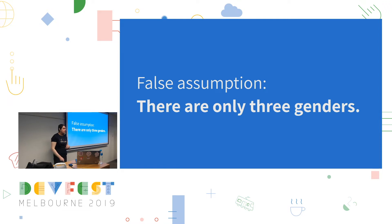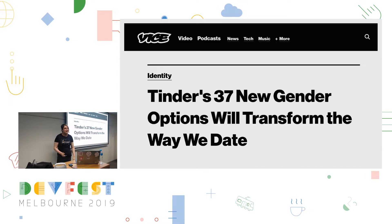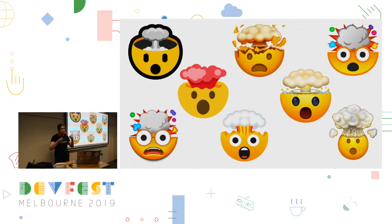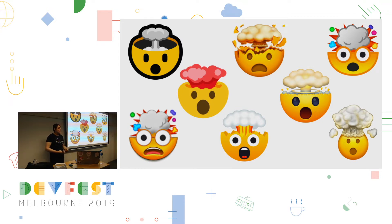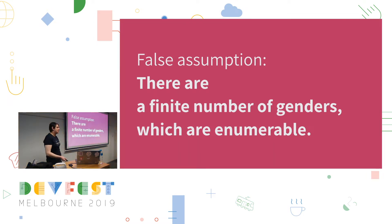So if there's not two, and there's not three, how many are there? Well, genderologists of leading dating app Tinder have discovered as many as 37 whole genders. I mean, it's still wrong, but it's good. What Tinder has done is going to allow a lot more people to express their identity in meaningful ways. It's a step in the right direction. But it's still based on an underlying false assumption — that there are a finite number of genders, or that you can enumerate them. You'll never be able to list them all out. That's just impossible.